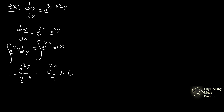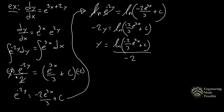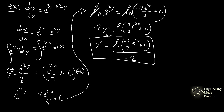There's an arbitrary constant on both sides, but combine them on one side to simplify. Multiply both sides by negative 2 to get e^(−2y) equals negative 2/3 times e^(3x) plus the constant C. Then apply the natural log to both sides, giving negative 2y equals ln(−2/3 · e^(3x) + C). Dividing by negative 2 gives the final solution for y.